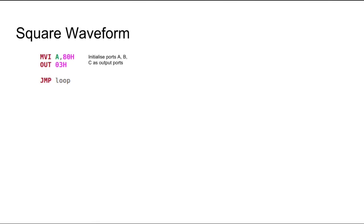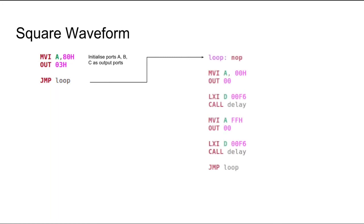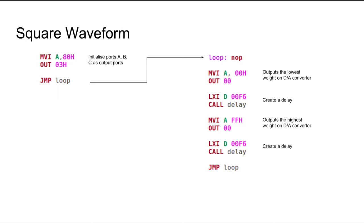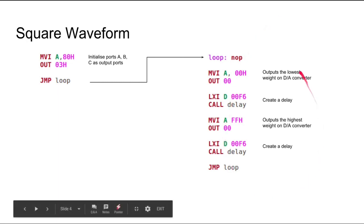Moving on to the square waveform. Similar to the previous waveform, we would be initializing the ports. Then, we would jump to the square loop subroutine. In the loop subroutine, we would output the lowest value of the accumulator, then generate a delay to create a horizontal line on the oscilloscope. Then, we would output the highest value of the accumulator, and then generate a delay. Then, we would jump to the loop again. This will be creating a periodicity.